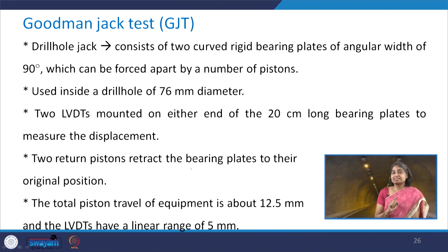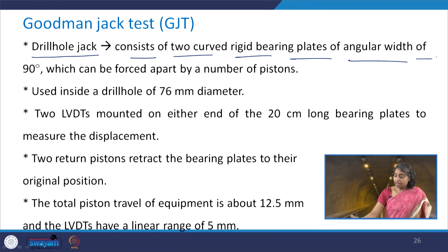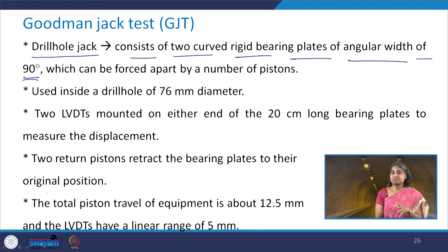In the Goodman Jack test, the test is conducted in a drill hole. The drill hole jack consists of 2 curved rigid bearing plates of angular width of 90 degrees which can be forced apart by a number of pistons. These are used inside a drill hole of 76 millimeter diameter, so we do not need to make a very large excavation.